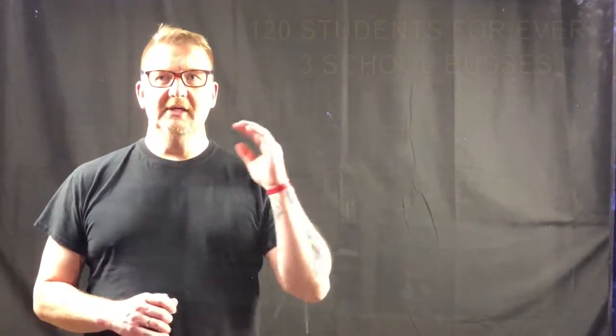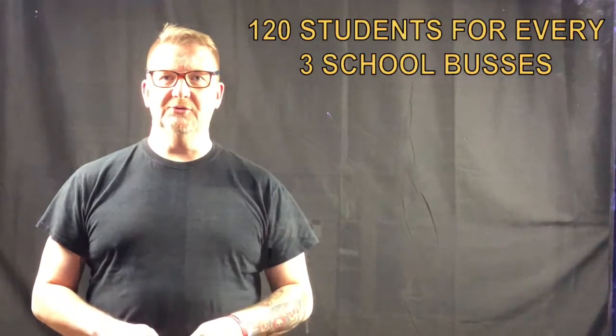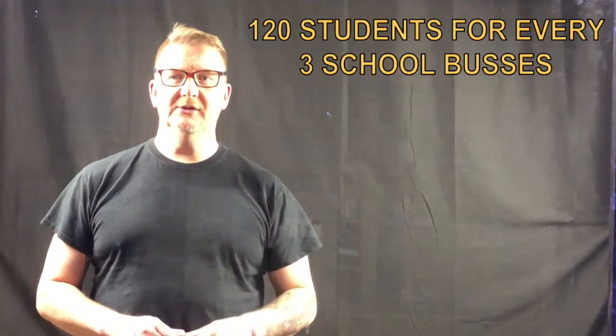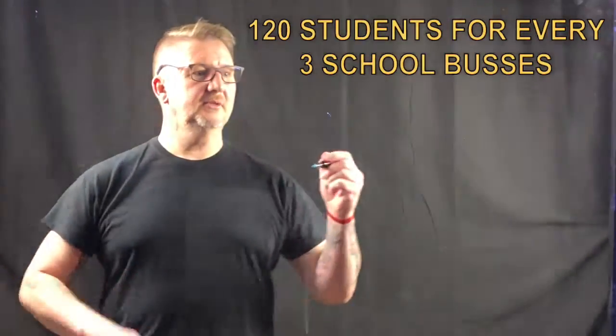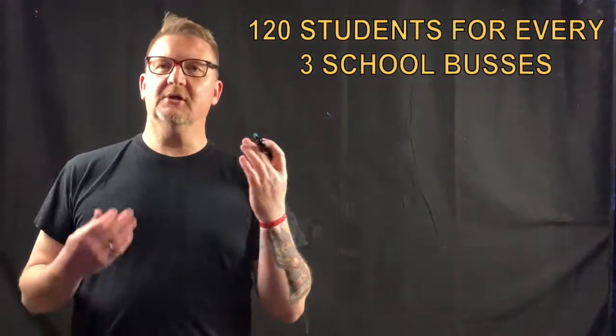I'm going to give you three examples and we're going to talk about each one, how to write it, what it means, and so forth. Our first example is 120 students for every three school buses. There's three ways we can write this. First of all, let's talk about the units.